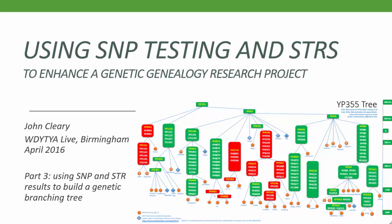Once we have all our SNP data, how can we use it to improve the trees we'd built with STR tests? Do SNP and STR data work well together, or are they like apples and pears? This is the third and last part of a presentation originally given at the Who Do You Think You Are Live event in Birmingham in April 2016, re-recorded with a few new or revised slides. Part 1 covered the basics of SNP testing, part 2 examined more advanced issues surrounding next generation sequencing tests. This final part will look at how SNP data can be fused with older STR data and genealogy research to build more effective descent trees.